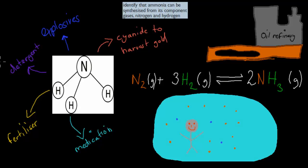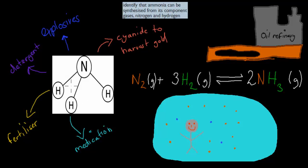In the last video, we talked about ammonia and what kind of industrial uses ammonia has. We said that ammonia itself often serves as a feedstock — it's part of the reactants — and we make different types of useful products. For example, ammonia can help us make explosives, detergents, fertilizers, medication, and cyanide to harvest gold.